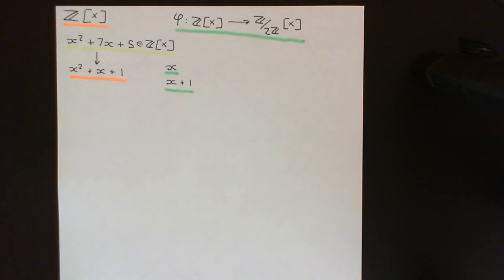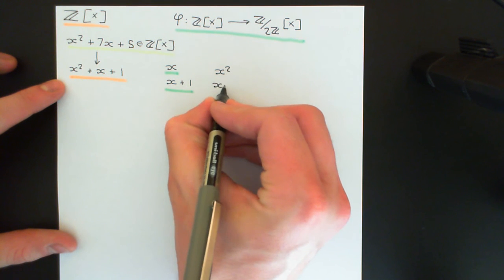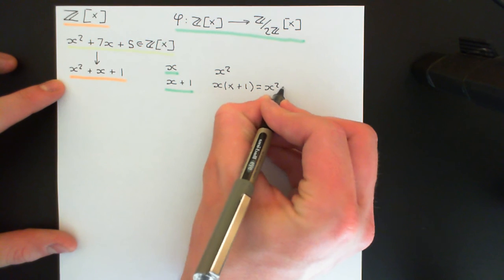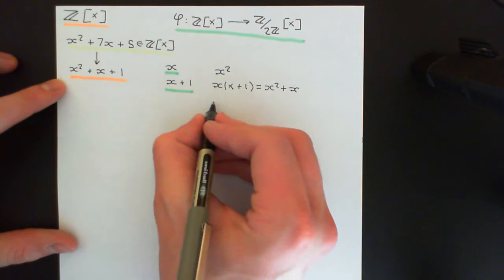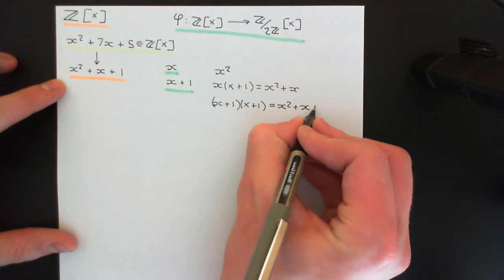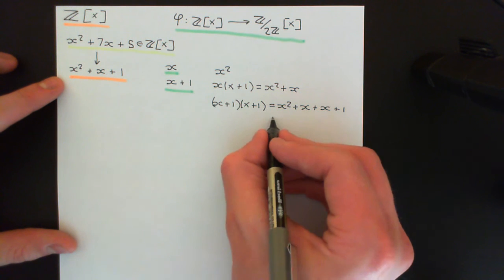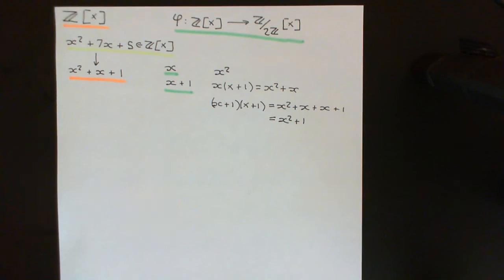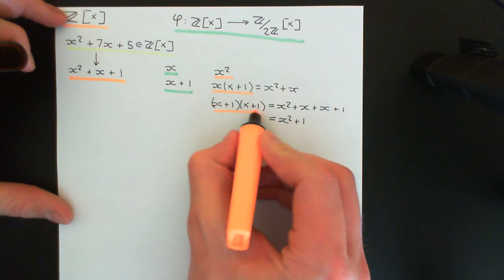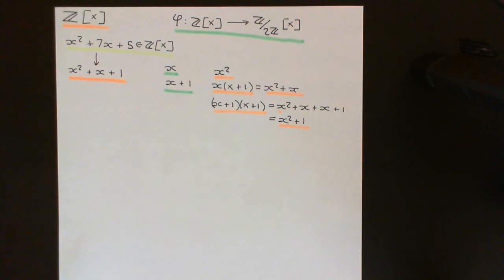Let's go through every possible product of degree-1 polynomials and show none equals x² + x + 1. Multiplying x by x gives x². Multiplying x by (x + 1) gives x² + x — not x² + x + 1. Finally, (x + 1)(x + 1) gives x² + x + x + 1; but 1 + 1 = 0 in ℤ/2ℤ, so this equals x² + 1. None of the possible products of degree-1 polynomials yields x² + x + 1.